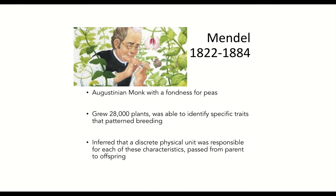Let's go over some key points about Mendel that you will need to know for the quiz. Mendel was an Augustinian monk with a fondness for peas. He grew 28,000 plants and was able to identify specific traits that patterned breeding in these peas. He inferred that a discrete physical unit was responsible for each of these characteristics, passed from parents to offspring.